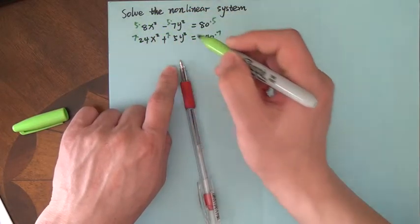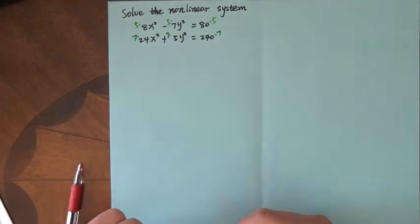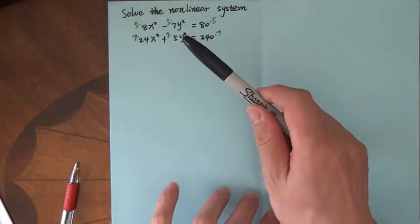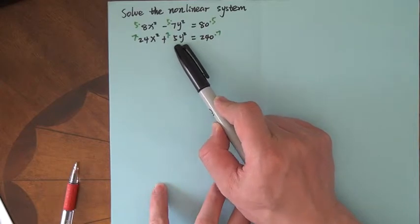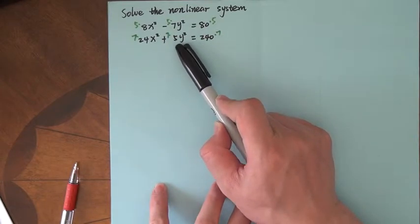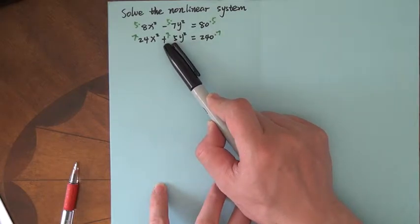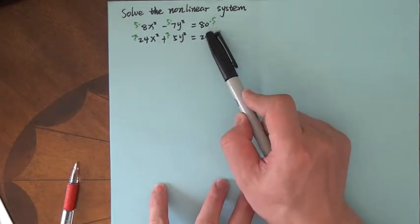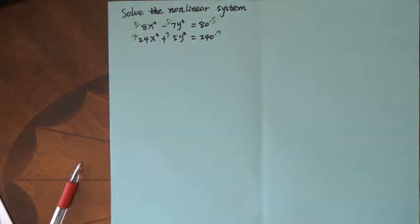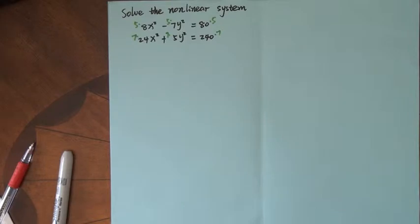Then you see what we get for the coefficient of y squared is 5 times 7, 7 times 5, so they are equal. The only thing is upstairs is negative, downstairs is positive. In this case, we can cancel y squared when we add those two equations together.